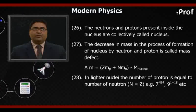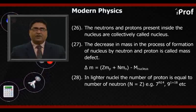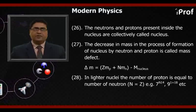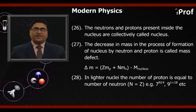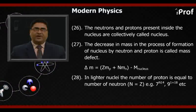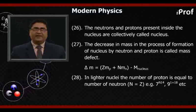In lighter nuclei, the number of protons is equal to number of neutrons, so N equals Z, for example ₇N¹⁴, ₉F¹⁸, etc.